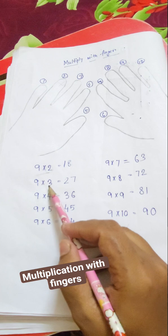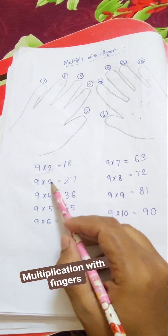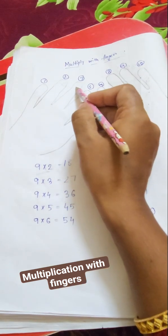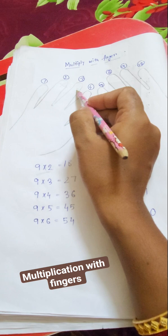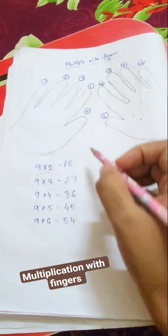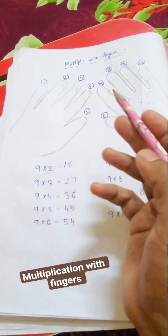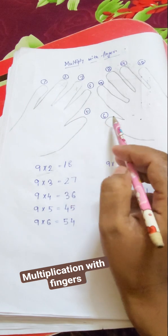Next, 9 multiplied by 3. Here is the 3, so I have crossed the number 3 finger. What comes before 3? 1 and 2, so I have written 2 over here. And after 3 there is 1, 2, 3, 4, 5, 6, 7. So I have written 7 here.